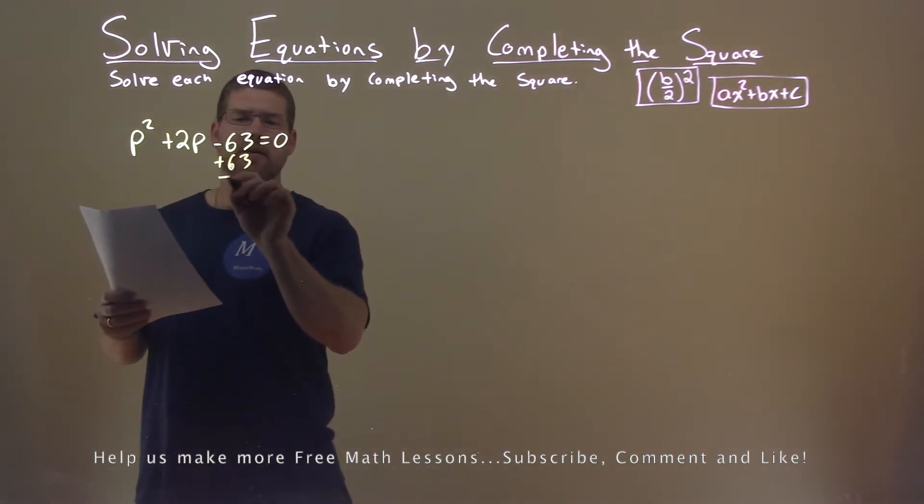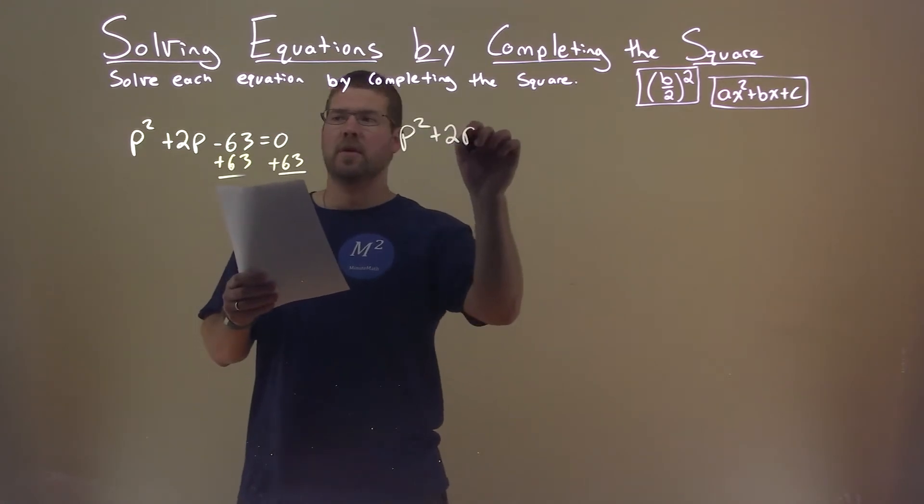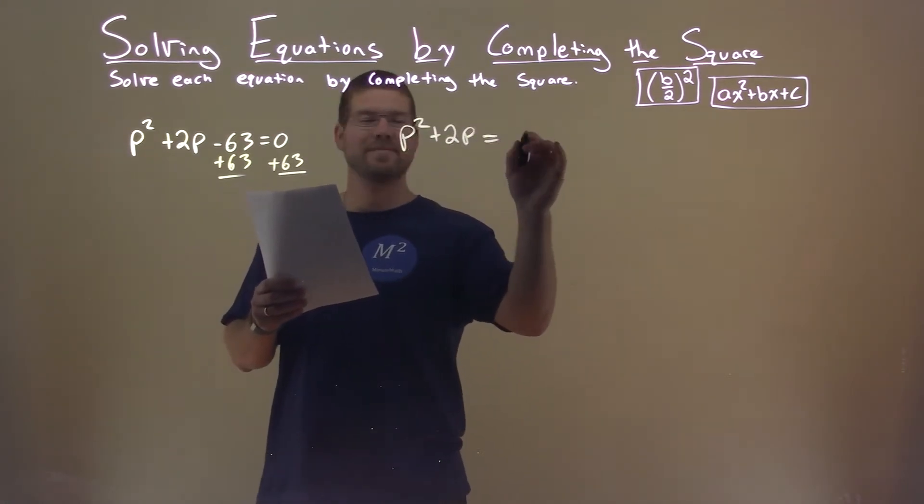I'm going to add 63 to both sides of the equation. That leaves me with p squared plus 2p equals positive 63.